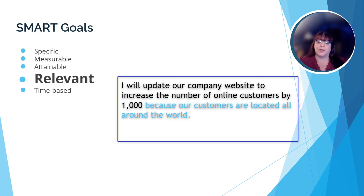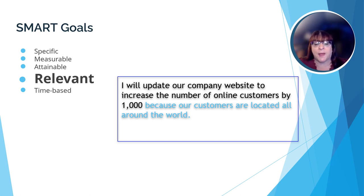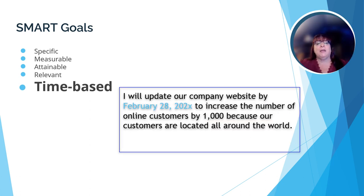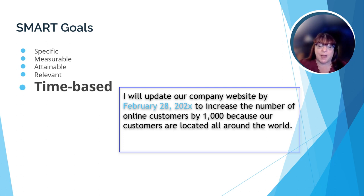R is for relevant — we want to align our goals with what is important to our organization. For example, 'I will update our company website to increase the number of online customers by 1,000 because our customers are located all around the world.' Finally, T is for time-based, meaning there's a reasonable amount of time. For example, 'I will update our company website by February 28 to increase the number of online customers by 1,000 because our customers are located all around the world.'